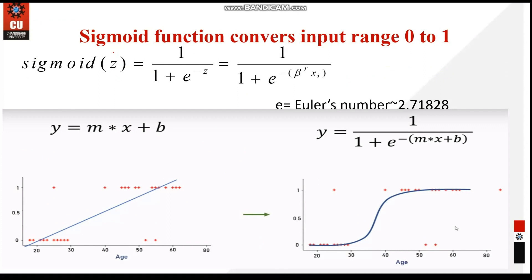A very important function is the sigmoid function. The sigmoid function is a mathematical function used to map predicted values to probabilities — it maps any real value into another value within the range of 0 to 1. The value of logistic regression must lie between 0 and 1, which cannot go beyond this limit, and it forms the S-shaped curve we have seen.